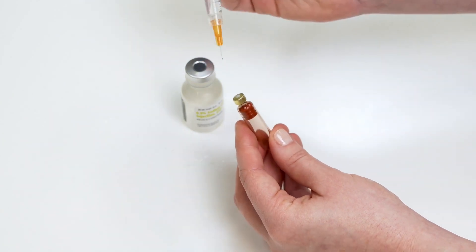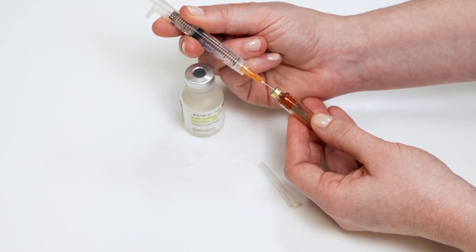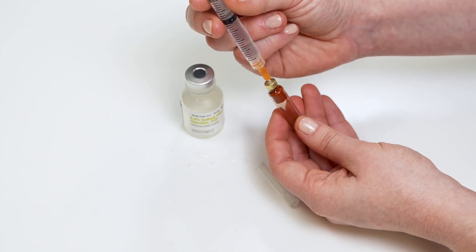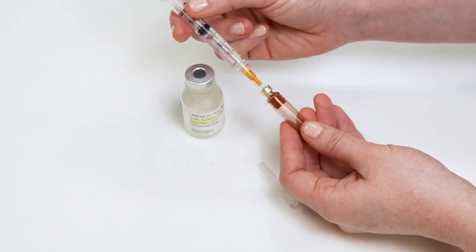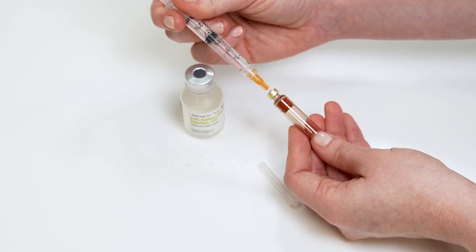To fill the islet cartridge, hold the cartridge with one hand and with the other hand, insert the syringe needle into the gray cartridge septum. Press down slowly on the syringe plunger rod to transfer the insulin from the syringe into the cartridge.